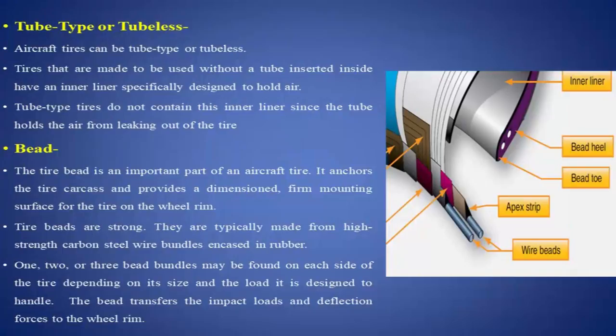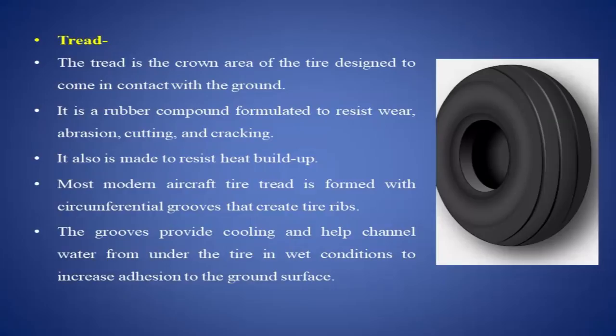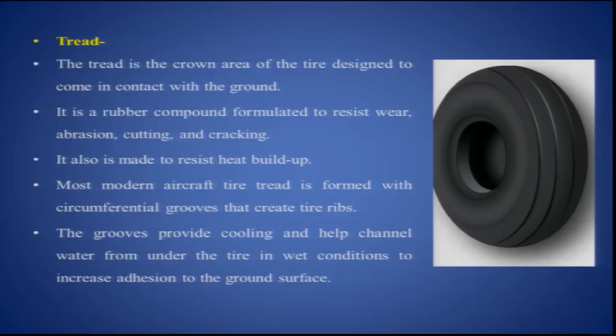The tread is the crown area of the tyre designed to come in contact with the ground. It is a rubber compound formulated to resist wear, abrasion, cutting and cracking, and is also made to resist heat build-up. Most modern aircraft tyre treads are formed with circumferential grooves that create tyre ribs. These grooves provide cooling and help channel water from under the tyre in wet conditions to increase adhesion to the ground surface.